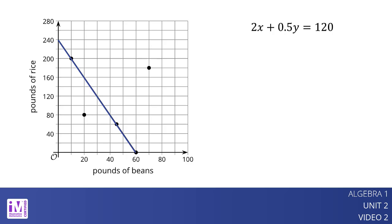Each point on the line is a pair of x and y values that make the equation true, and is thus a solution. It is also a pair of values that satisfy the constraints in the situation.